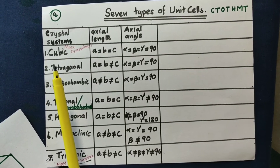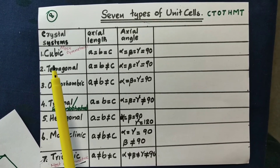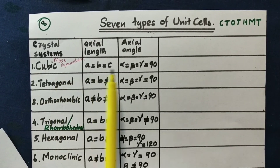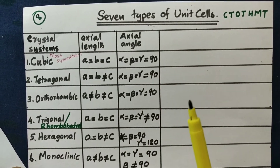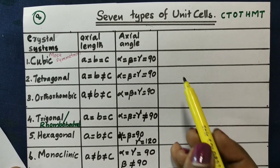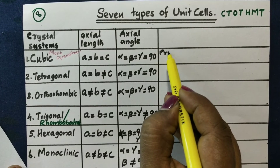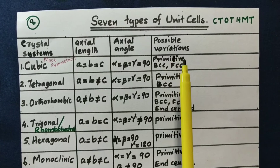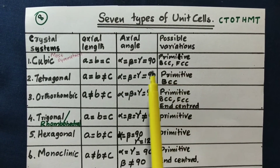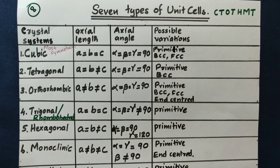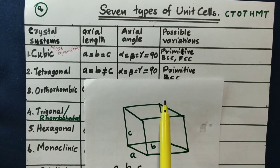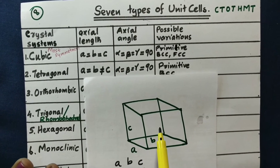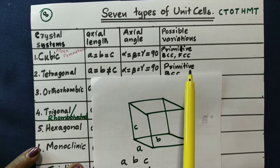We will study primitive cells, body-centered cells (BCC), face-centered cells (FCC), and end-centered cells. Cubic cells have three types: primitive cells, BCC, and FCC cells. We have studied primitive, body-centered, and face-centered cells in the cubic system.